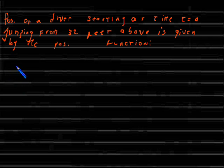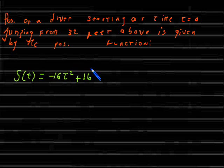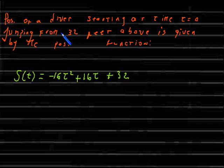Let me write the function over here. The function is s of t, which is equal to negative 16t squared plus 16t plus 32. This is the position function for the diver who jumped from 32 feet above the water.